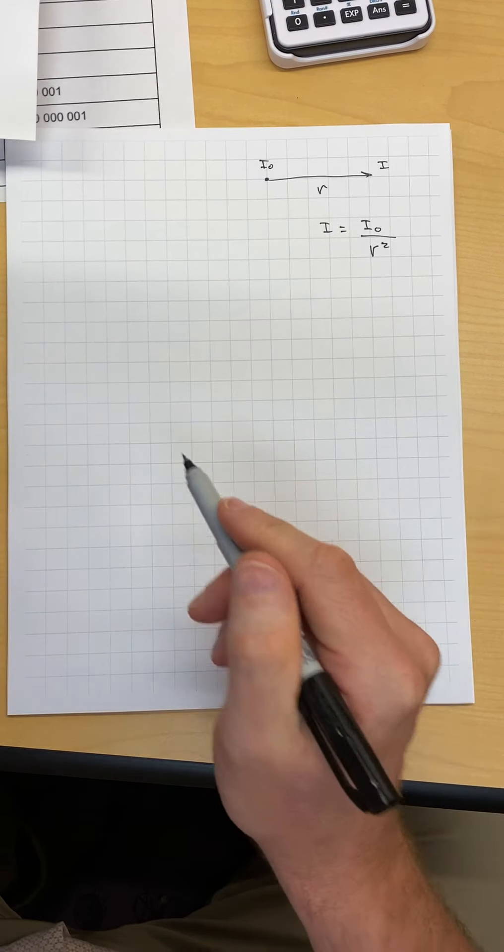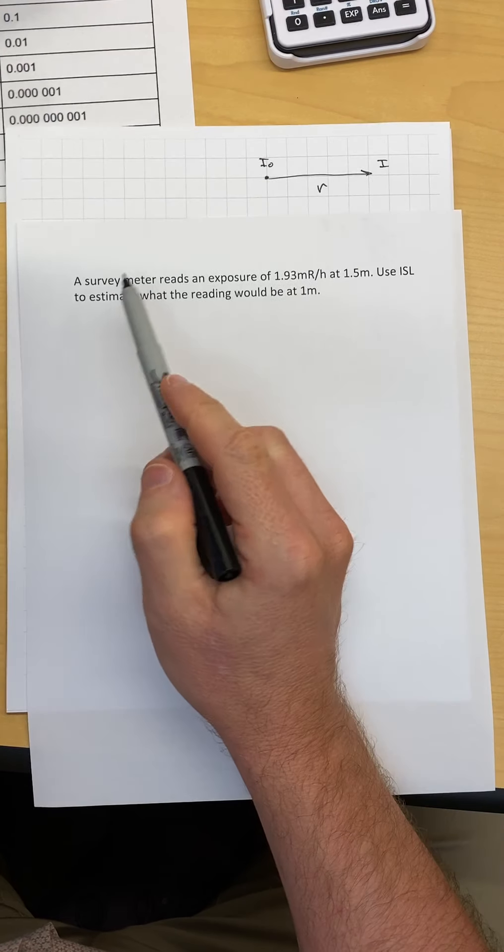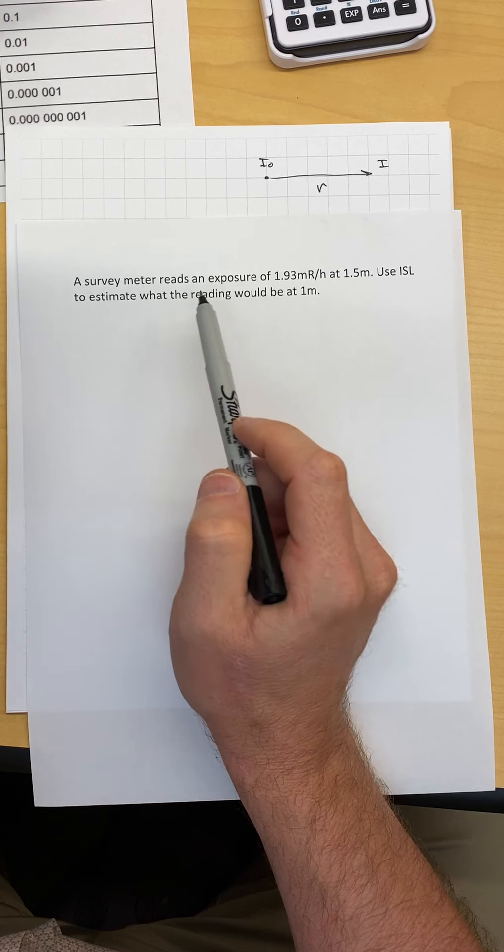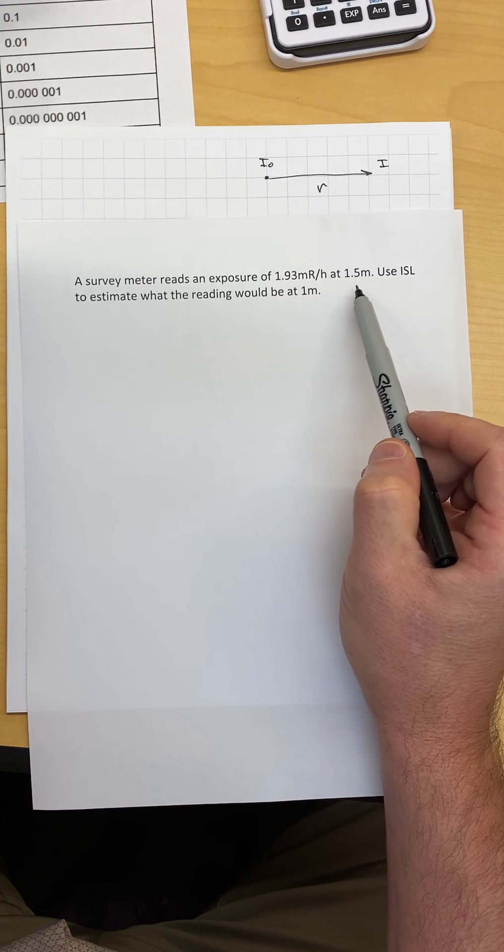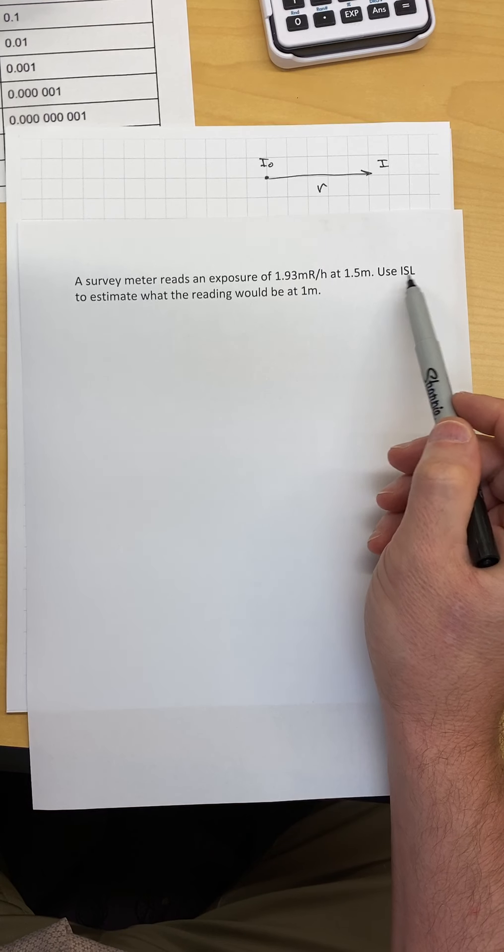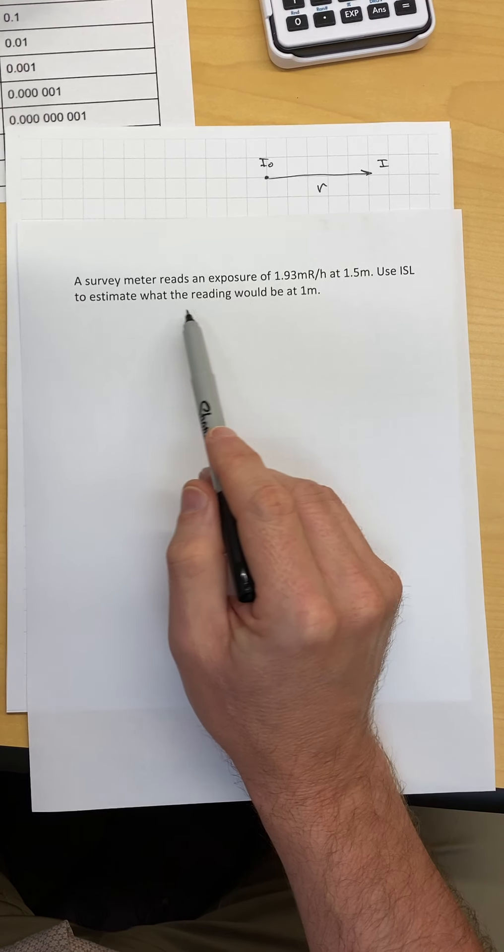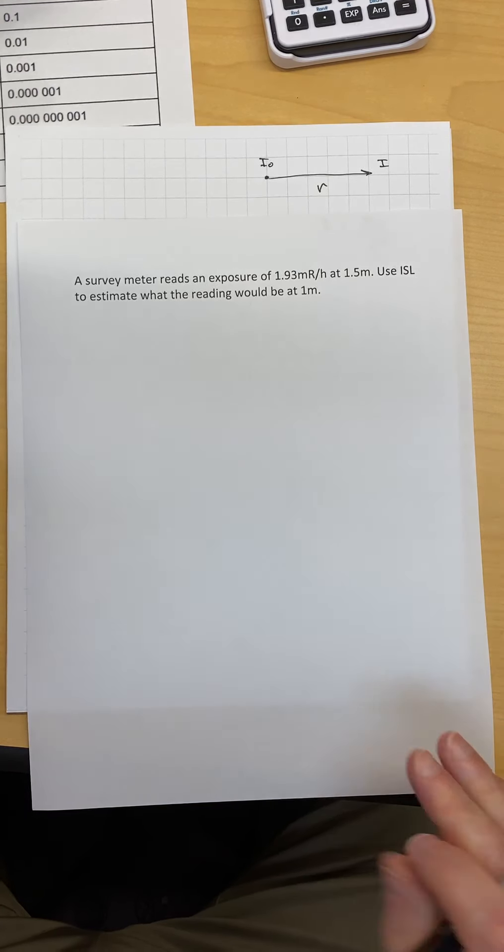A lot of times when we apply inverse square law, you'll have a question like this. A survey meter reads an exposure of 1.93 milliroentgen per hour at 1.5 meters. Use inverse square law to estimate what the reading would be at 1 meter.